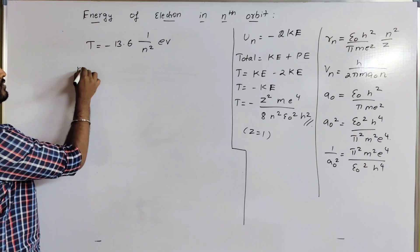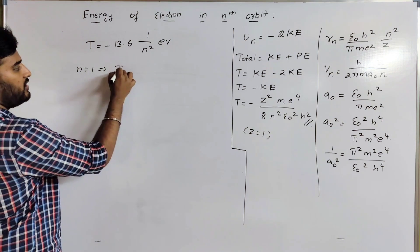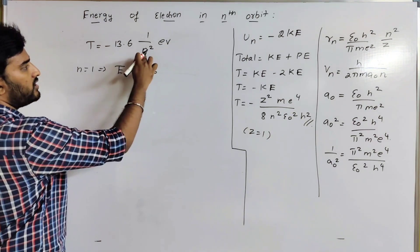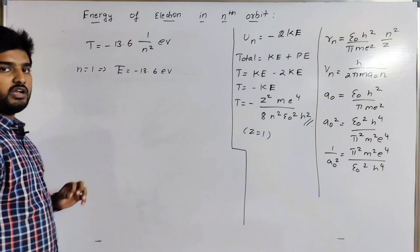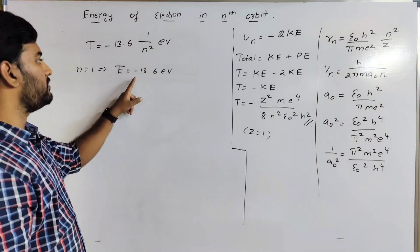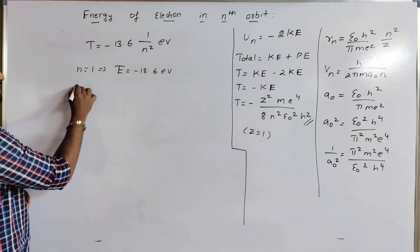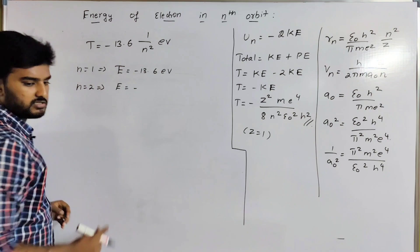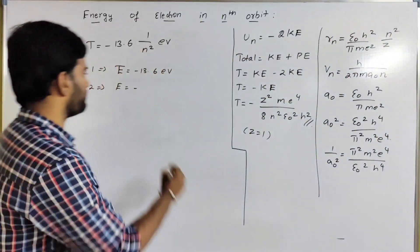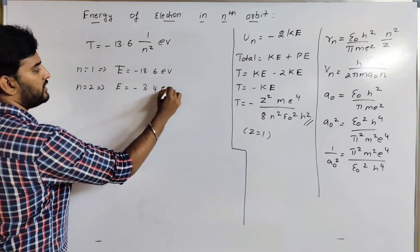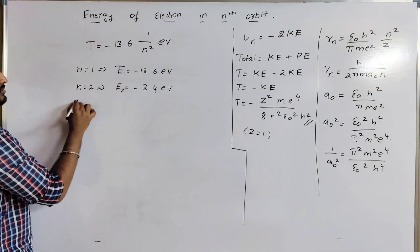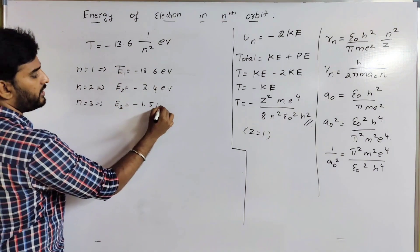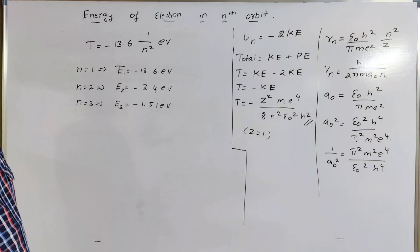For the first orbit, n equals 1: E1 equals minus 13.6 electron volts. For n equals 2: E2 equals minus 3.4 electron volts. For n equals 3: E3 equals minus 1.51 electron volts. These are the energy levels of the hydrogen atom.